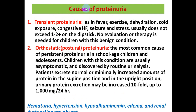Types of proteinuria: Number 1 is transient proteinuria, which occurs in special situations like fever, exercise, dehydration, cold exposure, congestive heart failure, seizure, and stress. It usually does not exceed 1 or 2+ on dipstick, and no evaluation or therapy is required for children with this benign condition.